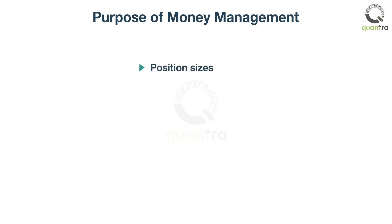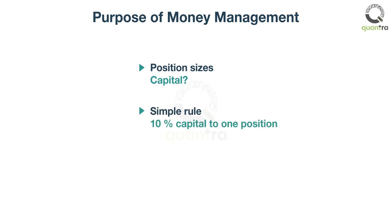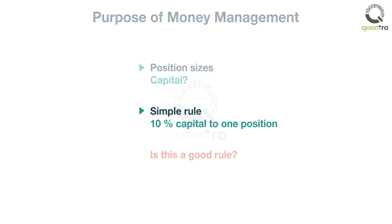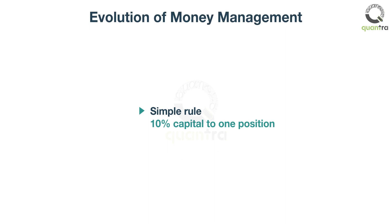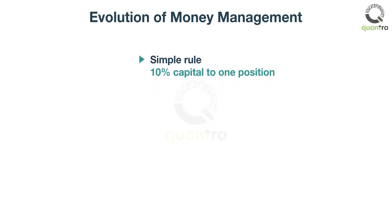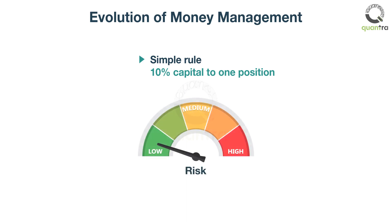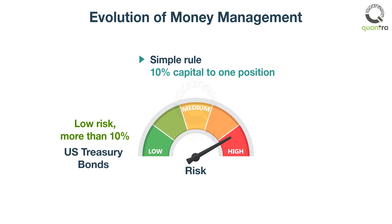The primary purpose of money management is to determine the position sizes — how much of our capital should be allocated to each trade. A simple rule can determine this; for example, we allocate 10% of our capital to each trade. But does it consider the potential risks or drawdowns? People are risk averse. Therefore, money management has evolved from simple rules and started to evaluate risks, and subsequently modify positions based on these risks.